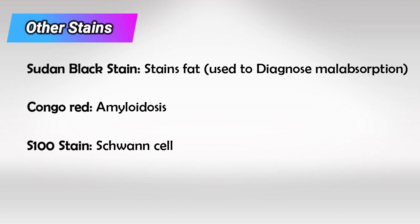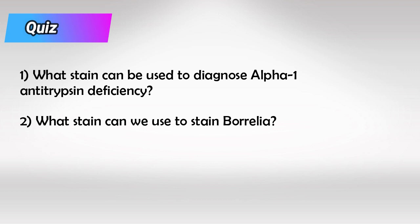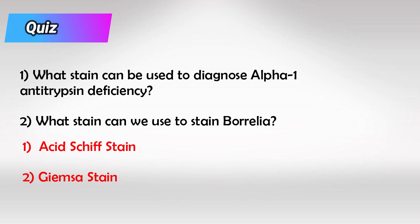This concludes all the stains you have to study for your Step 1 exam. Now let's have a small quiz: Which stain can we use to diagnose alpha-1-antitrypsin deficiency? And which stain can we use to diagnose Borrelia? Here are the answers.